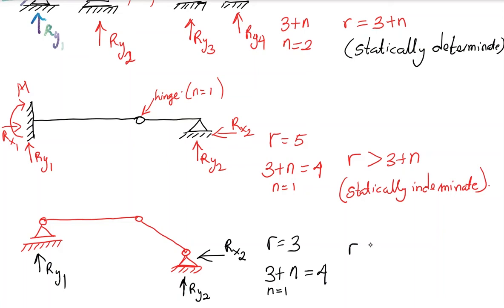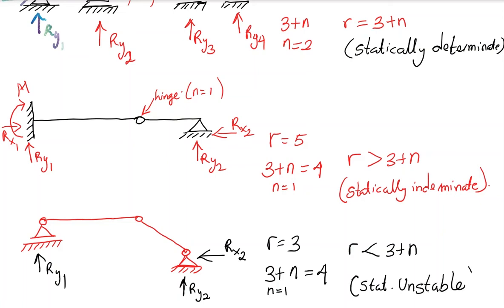n is equal to one because of the hinge, so three plus n equals four. Since r equals three is smaller than three plus n equals four, this structure is statically unstable.